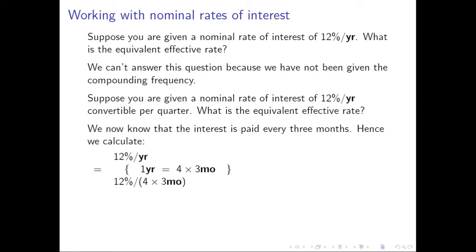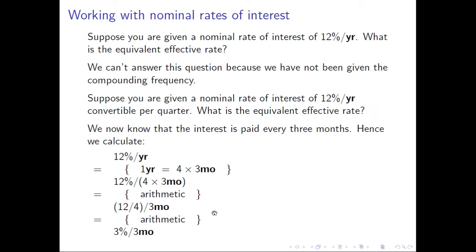12% per year — one year equals 4×3 months. So 12% per year equals 12% per (4×3 months). We apply arithmetic, because we want an expression per three months. So that's 12/4 = 3% per three months. Therefore 12% per year nominal is equal to 3% per three months effective.